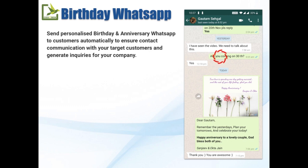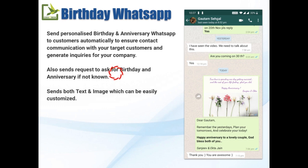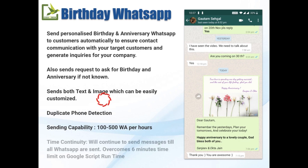These are some of the features of this sheet: it will automatically send birthday and anniversary WhatsApp messages to your target friends and customers. It also has a feature to ask them for a birthday or anniversary date in case you don't know it. It sends both text and images, and both can be easily customized. It can help detect duplicate phone numbers. The sending capability is up to 500 messages per hour depending on the kind of attachment you send. There is time continuity — it will keep sending messages throughout the day with appropriate breaks to prevent any WhatsApp spam action.